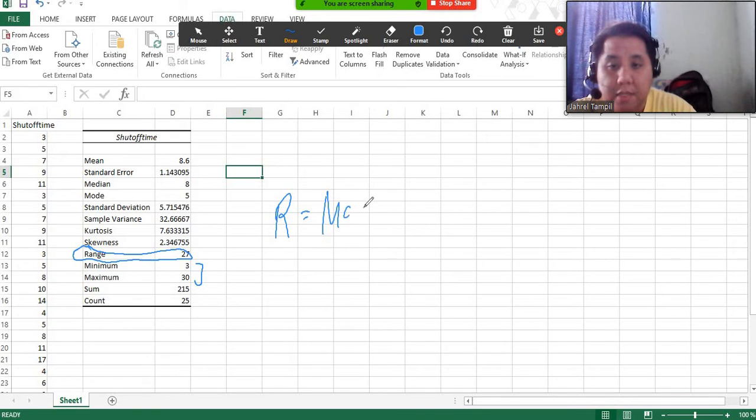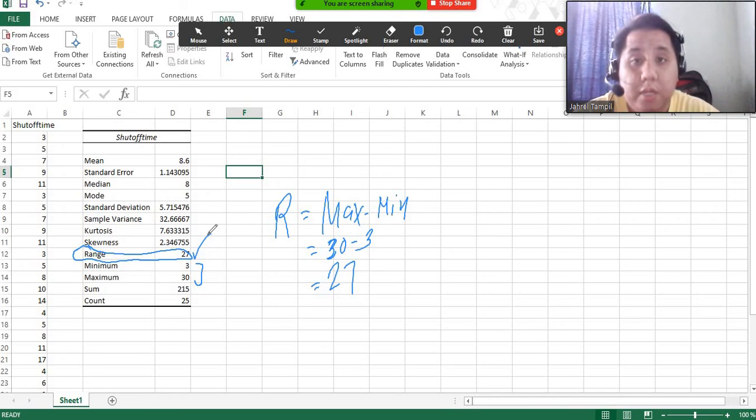Because based on our definition, range will be equal to the maximum minus the minimum. And that would be 30 minus 3 and that would give us the range of 27. So that is correct. The range of our values is indeed 27.